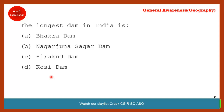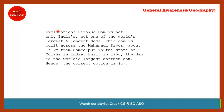The longest dam in India is the Hirakud dam, and it is on the Mahanadi river. The length of the Hirakud dam is approximately 25 kilometers.